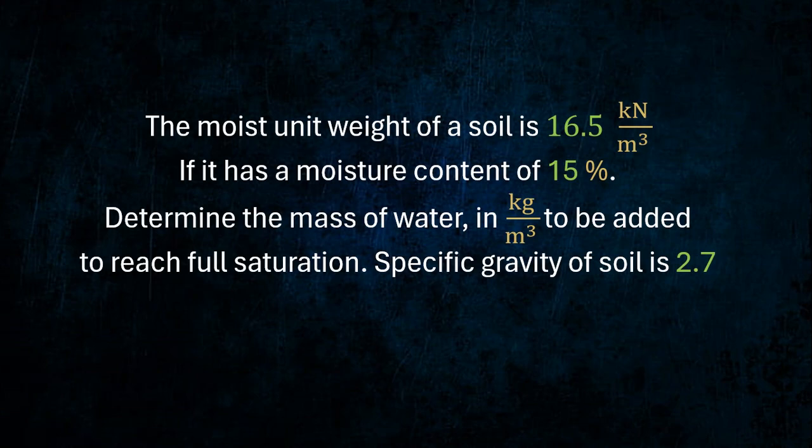The moist unit weight of a soil is 16.5 kilo Newton per cubic meter. If it has a moisture content of 15 percent, determine the mass of water to be added to reach full saturation. Specific gravity of soil is 2.7.